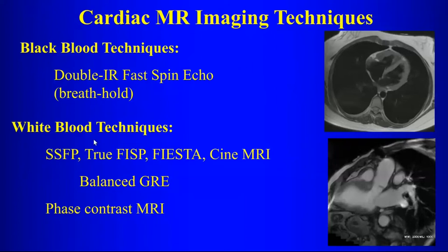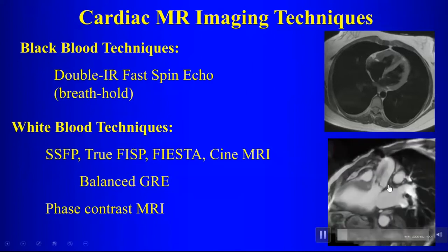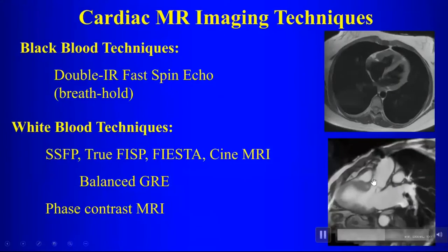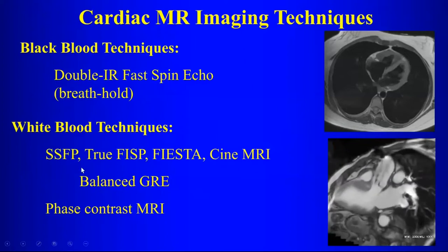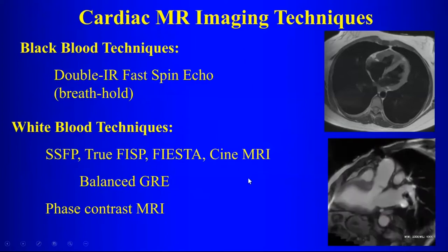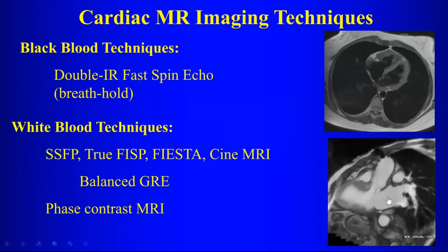That's a black blood technique, as opposed to white blood techniques where the flowing blood looks white. The advantage of white blood techniques is these are movie-type views where you can see the heart moving. The terms for that are steady state free precession, True FISP, Fiesta, SSFP, balanced gradient echo — all synonymous for this type of technique.